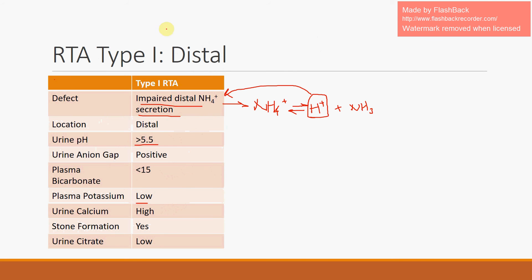Type 1 renal tubular acidosis is the most severe acidemia of the different subtypes. Because of that, the plasma bicarbonate will be extremely low — less than 15. We'll discuss why it is much lower than the other subtypes when we cover type 2 and type 4 RTA. The urine anion gap is something clinicians will get to see if a patient potentially has a renal tubular acidosis. It equals urine Na plus urine K minus urine chloride — that is the equation for the UAG, the urine anion gap.